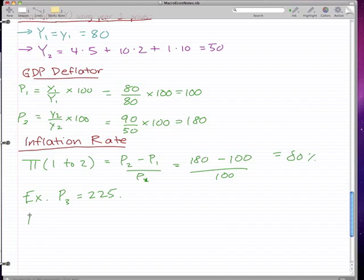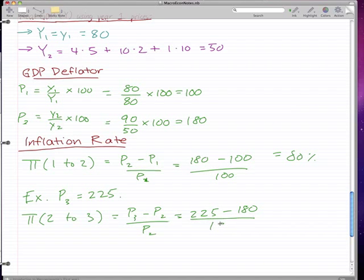Well, the π, the inflation rate of 2 to 3 would have to be equal to P3 minus P2 over P2, right? Simple. So 225 minus 180 over 180, and that'll equal 45 over 180, and that'll equal 25%.